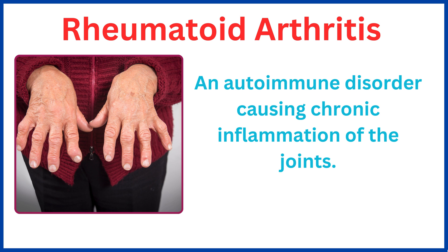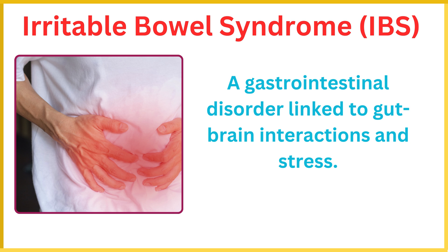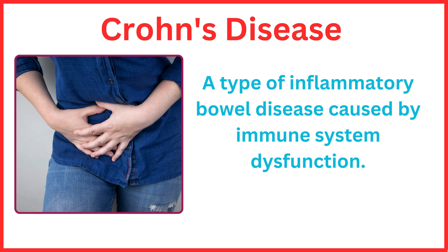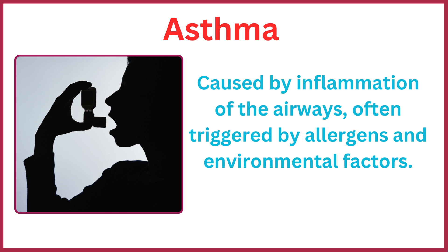Rheumatoid arthritis is an autoimmune disorder causing chronic inflammation of the joints. Psoriasis is caused by the immune system leading to rapid skin cell growth. Irritable bowel syndrome is a gastrointestinal disorder linked to gut-brain interactions and stress. Celiac disease is an autoimmune disorder triggered by ingestion of gluten in genetically predisposed individuals. Asthma is caused by inflammation of the airways, often triggered by allergens and environmental factors.